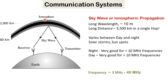Sky wave communication is very useful because it supports long distance communication — waves can travel up to 3,500 miles in a single hop. The disadvantage is that the ionosphere's reflective properties vary between day and night, and also vary due to solar storms and sunspots.